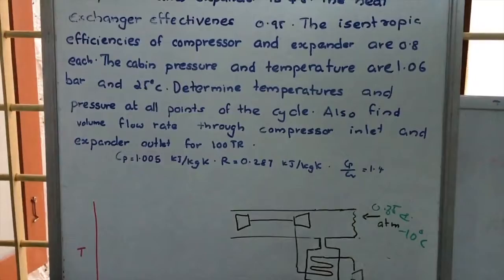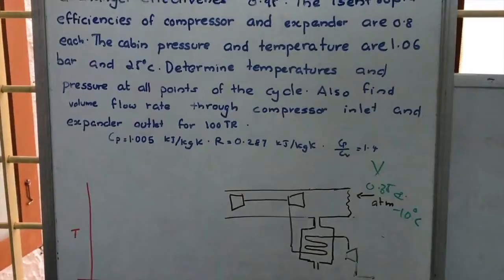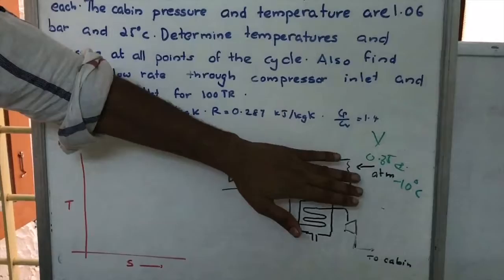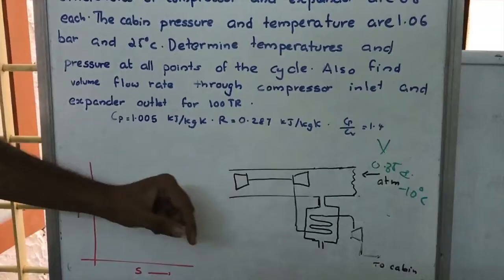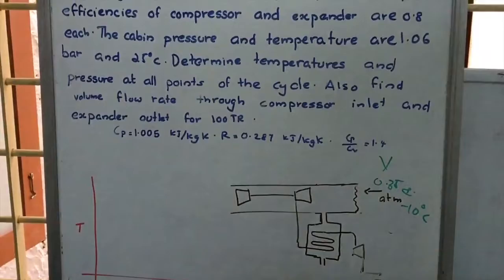If we take it in a relative way, we can assume that the air is entering with a velocity of 1000 km per hour. When air enters the conduit, there will be a ramming process — an increase in pressure due to the deceleration of air in the conduit.